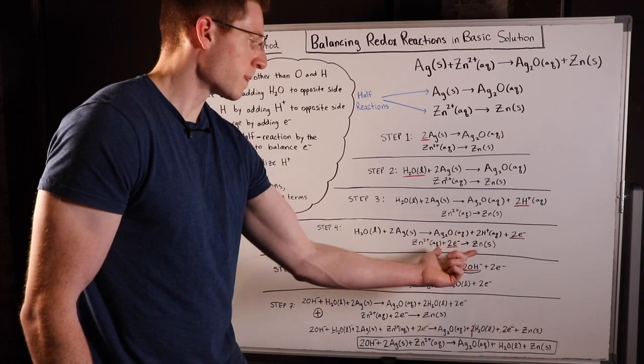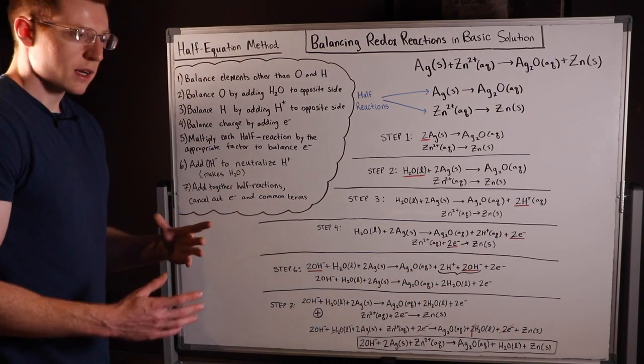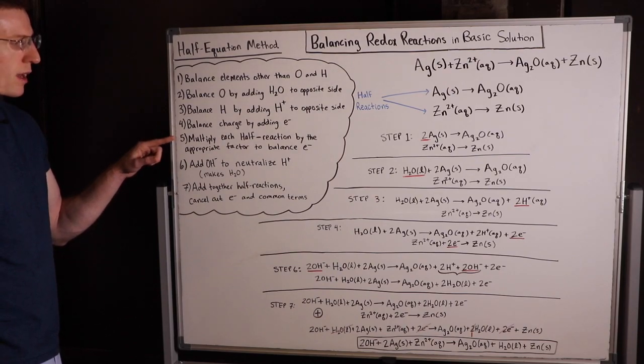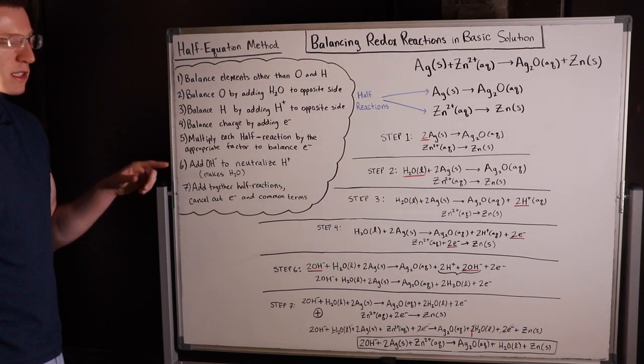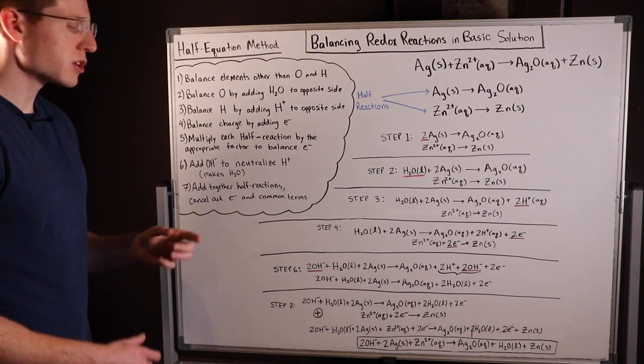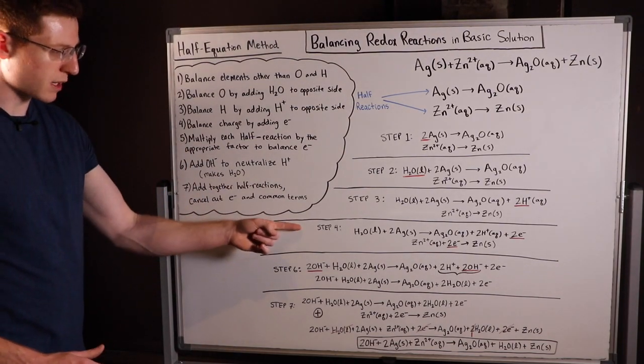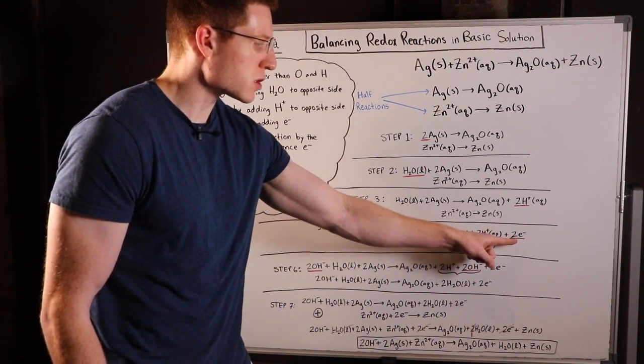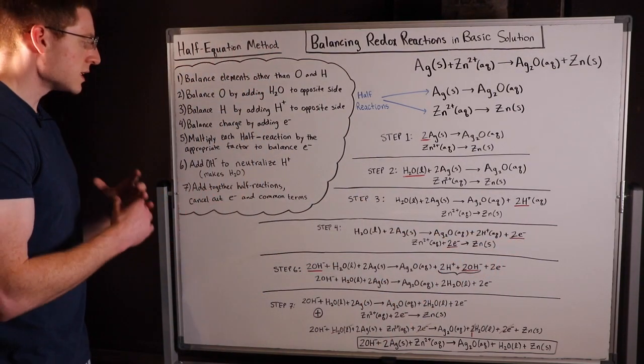Step five: we multiply each half reaction by the appropriate factor to balance the electrons. In this case step five is actually unnecessary. You can see I've skipped it, I've gone straight to step six, and that is because two matches with two - there is no need to multiply either equation by a number to balance out the electrons.